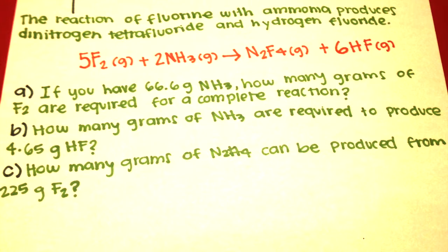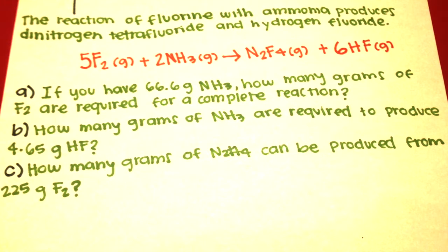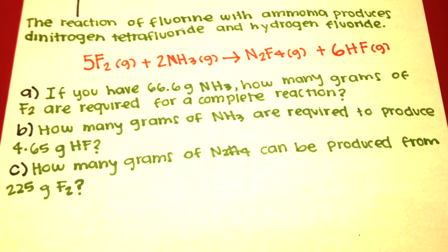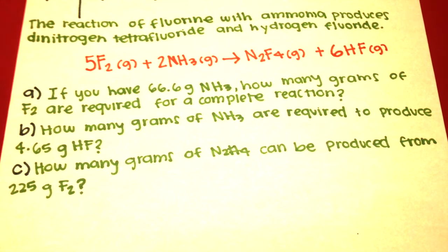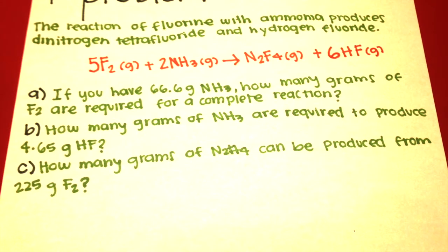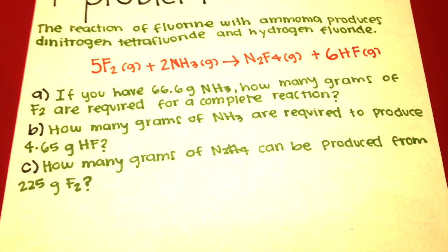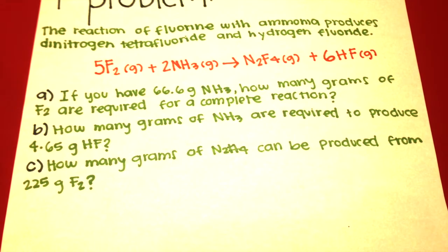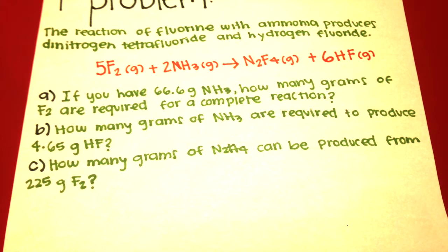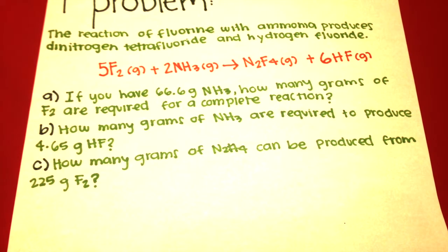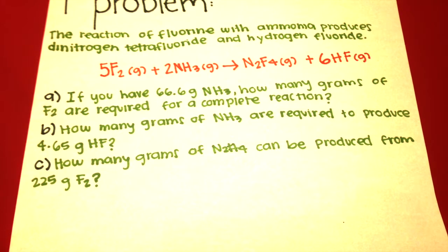The first problem says: the reaction of fluorine with ammonia produces dinitrogen tetrafluoride and hydrogen fluoride. There are three questions. A: If you have 66.6 grams of ammonia, how many grams of fluorine are required for a complete reaction? B: How many grams of ammonia are required to produce 4.65 grams of hydrogen fluoride? C: How many grams of dinitrogen tetrafluoride can be produced from 225 grams of fluoride?